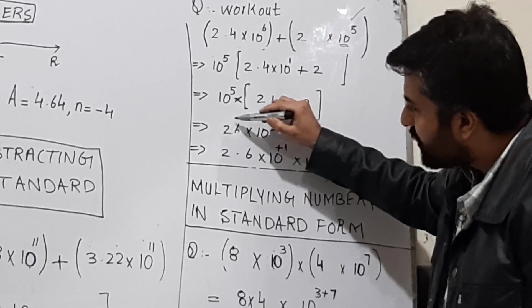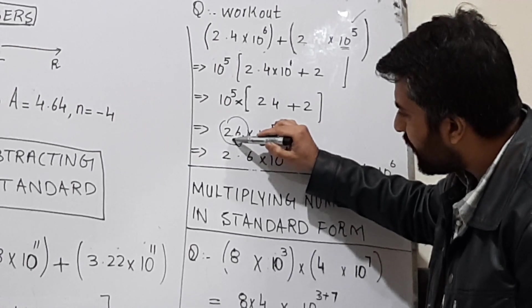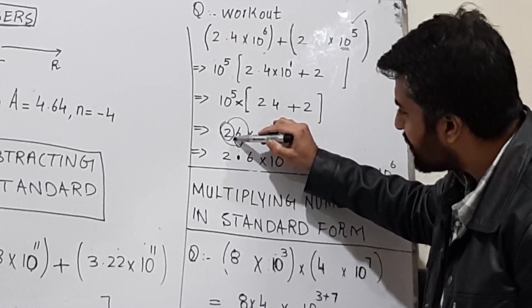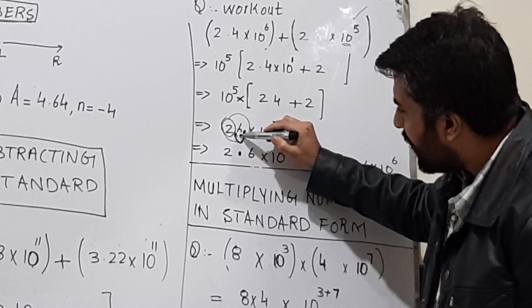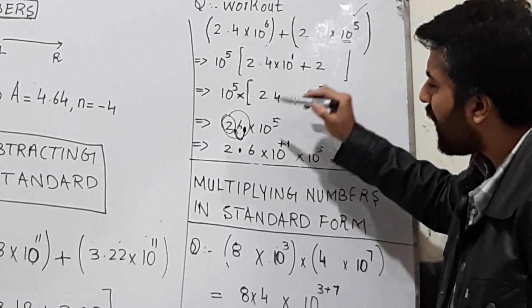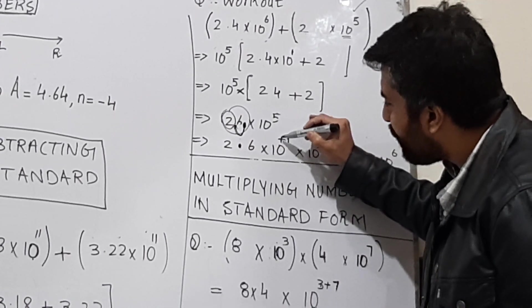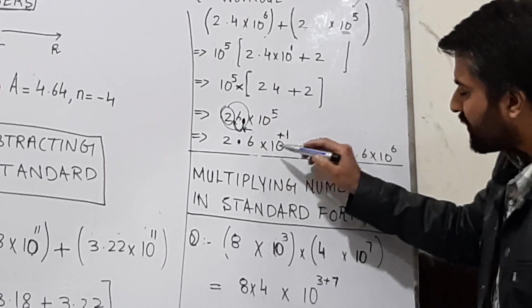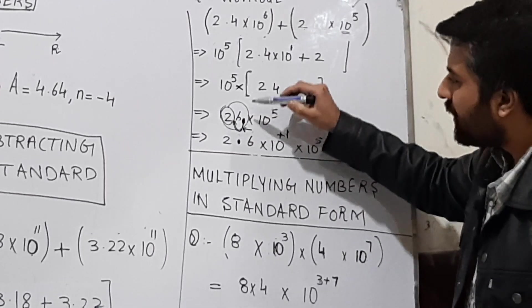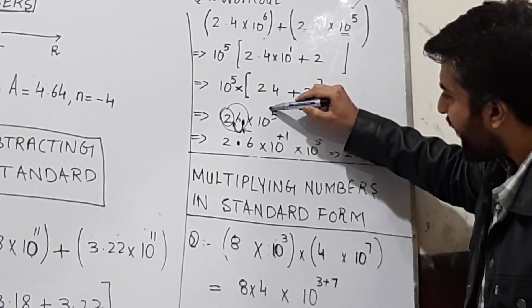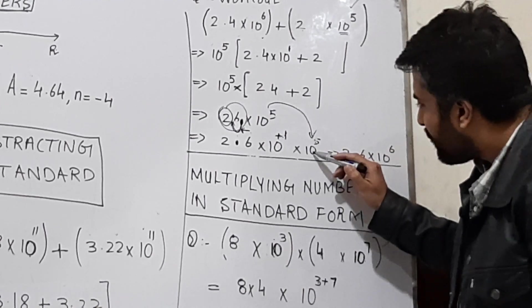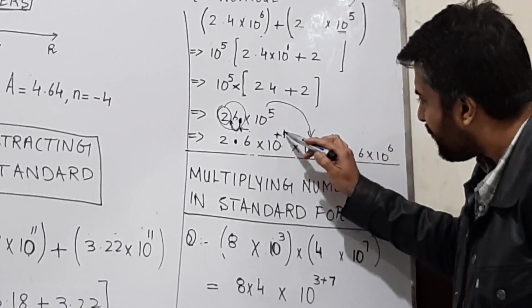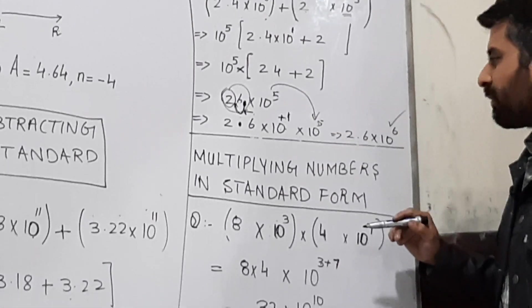Now 26 is not in standard form because the decimal is after 6. Move the decimal immediately after the first digit, so decimal comes after 2 — that is 1 digit moved from right to left, so add +1 to the power. 26 becomes 2.6 × 10¹. Multiplying by the existing 10⁵, and since bases are the same, add the powers: 1 + 5 = 6. So the final answer is 2.6 × 10 raised to the power 6.